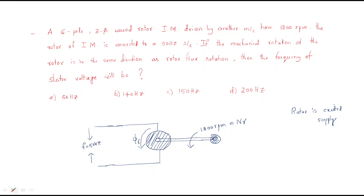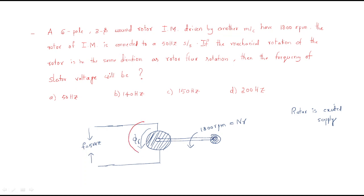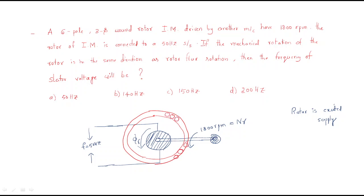We have a stator structure here. The stator doesn't have any supply, but the stator has conductors. The rotor will produce some flux, the flux will be induced in the stator conductors, and an EMF will be generated.